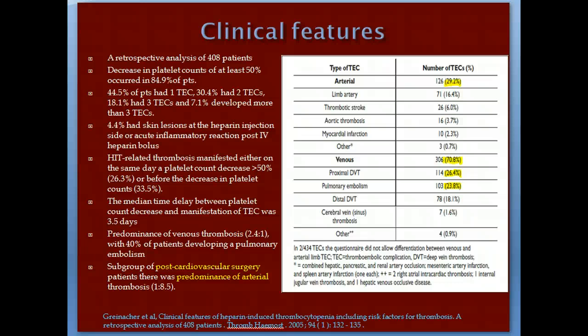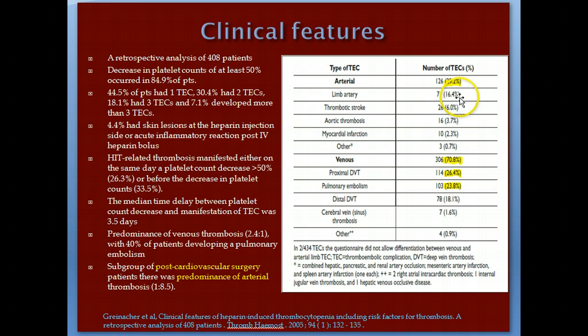A retrospective analysis of 400 patients showed that almost 85% had more than a 50% drop in platelet counts. Half developed thromboembolic events, a third had at least two events, and a fifth developed three events. Most thrombosis occurred at the day of the 50% drop or even before. Venous thrombosis accounts for two-thirds overall, except in cardiac surgery patients where arterial thrombosis predominates. The most common venous event is proximal DVT followed by PE; the most common arterial event is limb artery thrombosis followed by stroke.